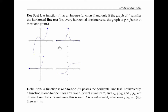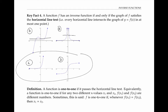Pause the video for a moment and see which of these four graphs satisfy the horizontal line test — in other words, which of the four corresponding functions would have an inverse function. You may have found that graphs A and B violate the horizontal line test, so their functions would not have inverse functions. But graphs C and D satisfy the horizontal line test, so these graphs represent functions that do have inverses. Functions that satisfy the horizontal line test are sometimes called one-to-one functions. Equivalently, a function is one-to-one if for any two different x values x₁ and x₂, the y values f of x₁ and f of x₂ are different numbers. Sometimes this is stated: f is one-to-one if whenever f of x₁ equals f of x₂, then x₁ must equal x₂.